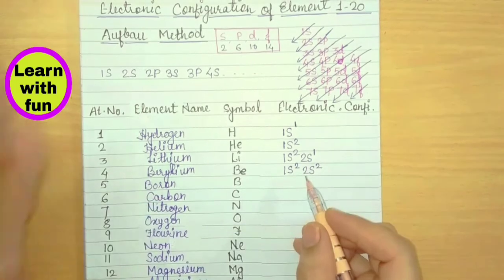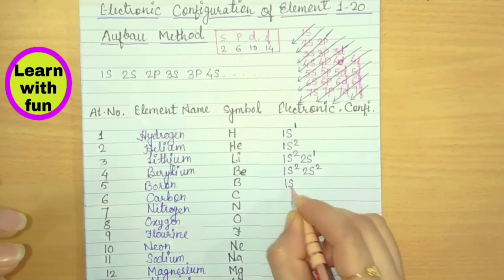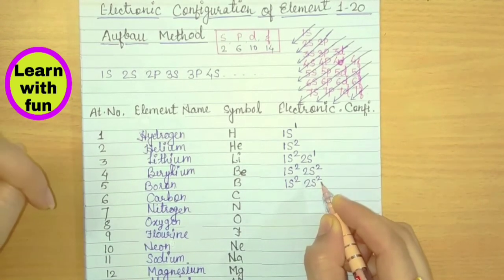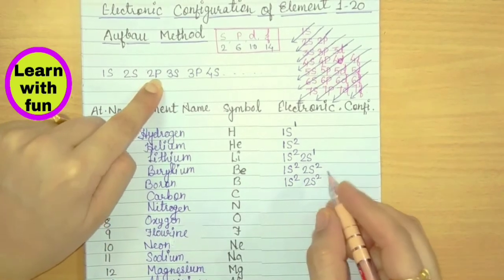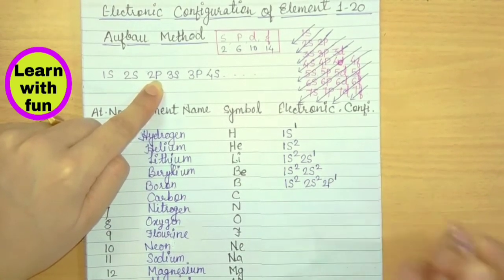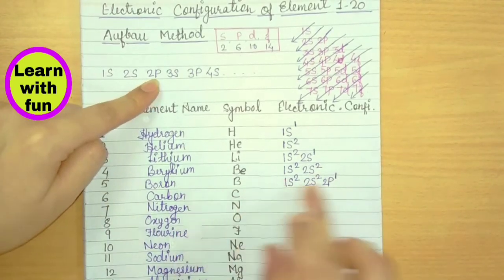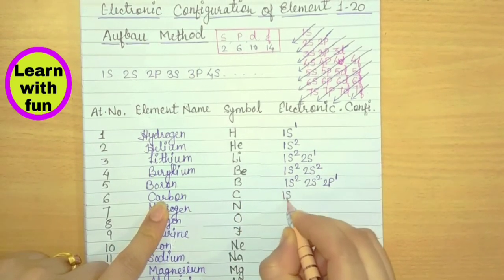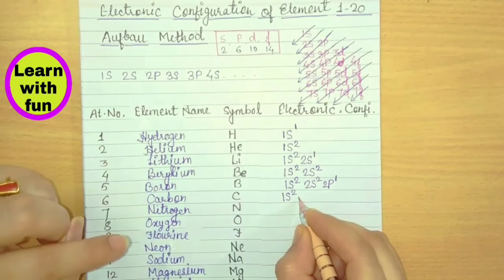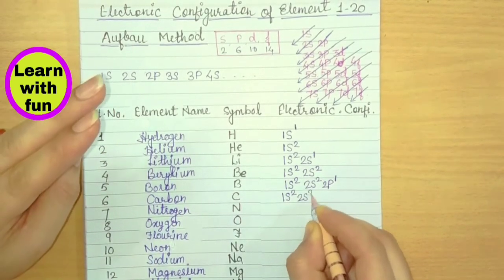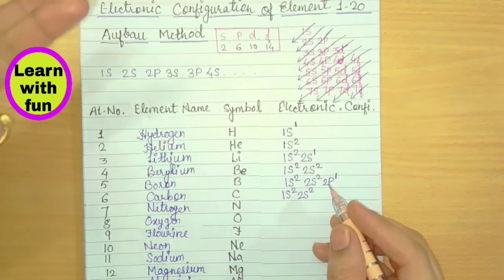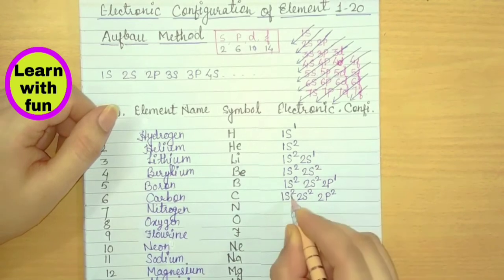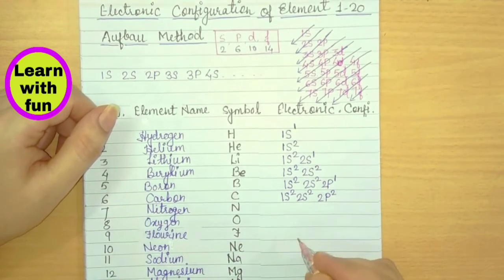Boron has 5 electrons: 1S2, 2S2 accounts for 4 electrons, and 1 electron is left, which goes into 2P1. Carbon has 6 electrons: 1S2 fills 2, 2S2 fills 2, and 2 electrons are left, which go into 2P2. So carbon's configuration is 1S2 2S2 2P2. Nitrogen has 7 electrons: 1S2, 2S2, and 3 remaining electrons go into 2P3.